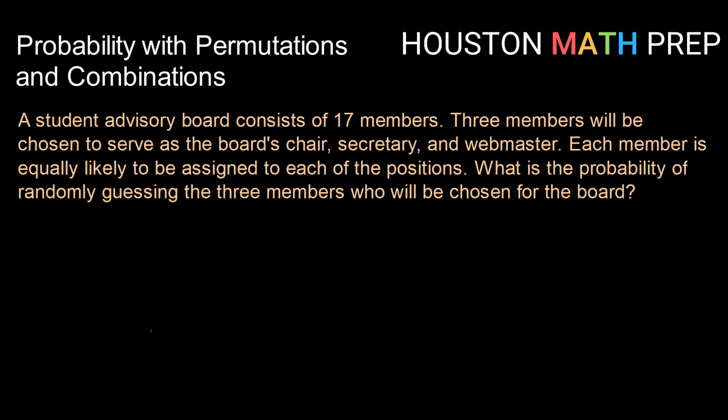The first question we need to ask is whether we're working with a permutation or a combination. Because we are assigning individuals to particular positions, order matters. Who the chair, who the secretary, and who the webmaster are matters — it is not just that we have three members of the executive board. They have particular positions, which means we're working with a permutation.